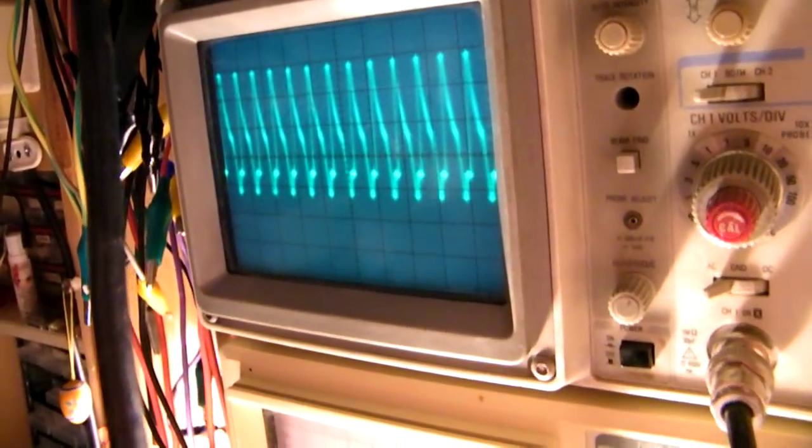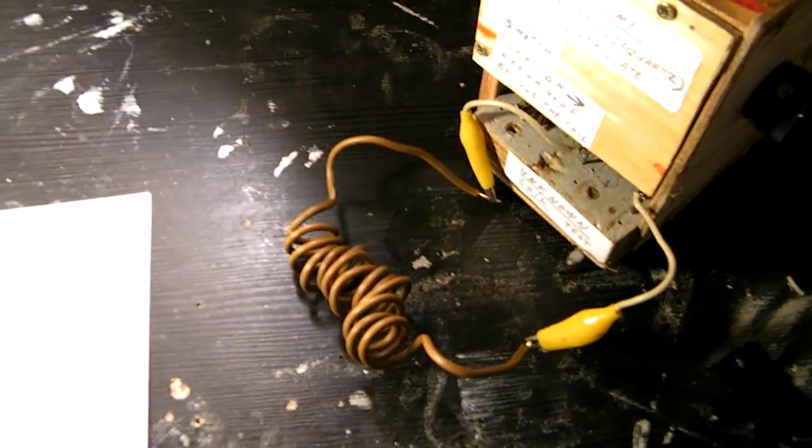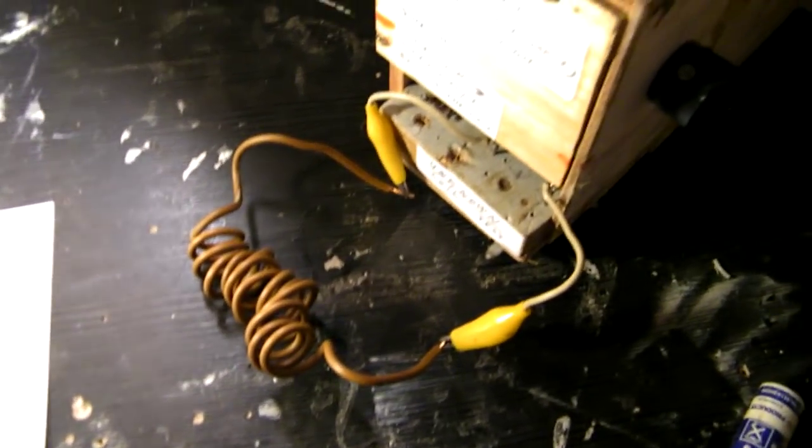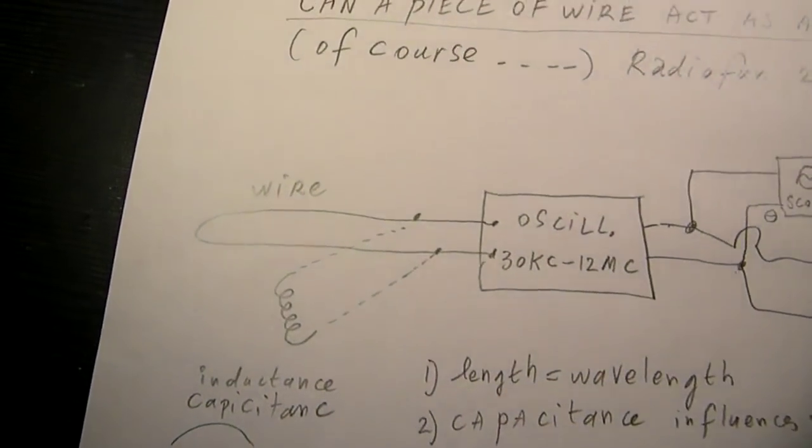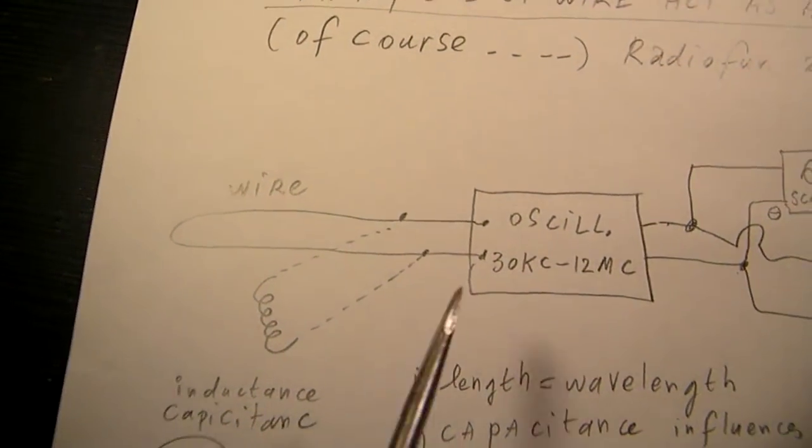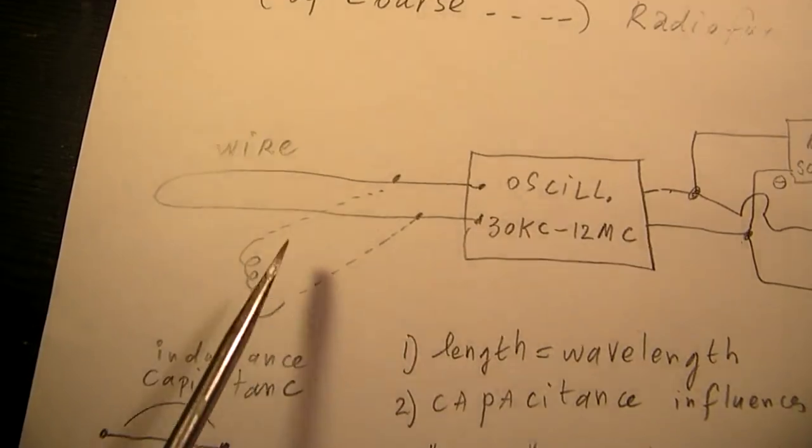But anyway, every piece of wire can be brought into oscillation in a certain situation. So that's visible here, the piece of wire and here the coil.